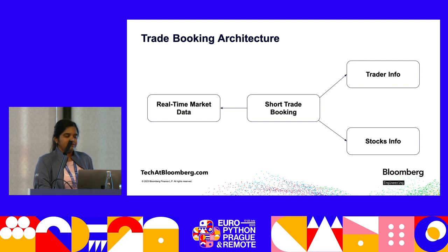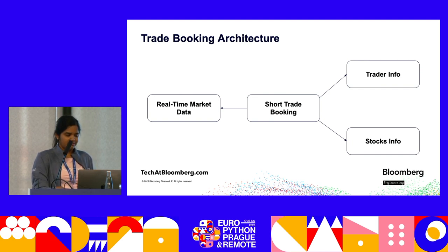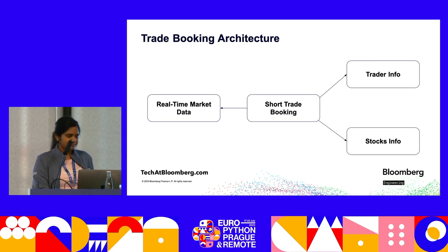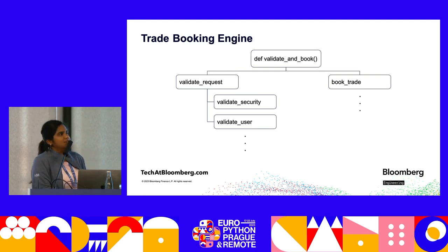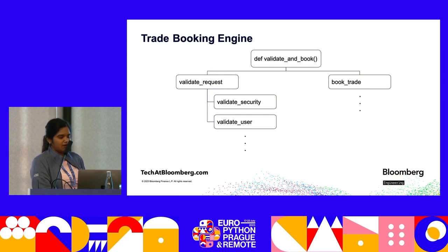Here's our trade booking architecture. We have our short trade booking service which is dependent upon many things such as trader info, stocks info, real market data, and much more. The real system is much more complex than this. However, for the sake of simplicity, we shall only focus on the trade booking engine. We have a lot of APIs which eventually hit this validate-and-book part of the code. Validate and book essentially calls two more functions: validate request and book trade, each with their own implementation.